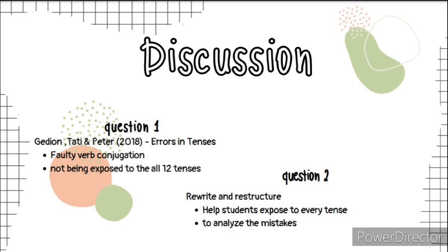Moving on to question 2. In order to put an end to these kinds of errors, teachers and students can utilize a technique known as rewrite and restructuring. This technique will help students analyze the mistakes they've done in tenses, and they can also learn the correct tenses to use in their writing. Students have to rewrite and restructure until they master all 12 tenses.